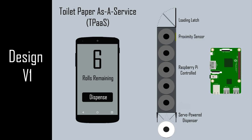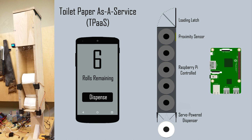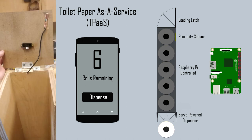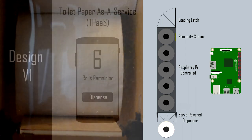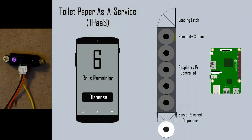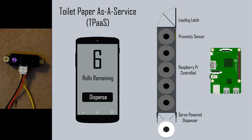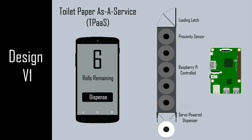Our preliminary design consisted of a tall enclosure to store the rolls, a hinge door to load the rolls from the top, and two servo-controlled platforms at the bottom to dispense them. A proximity sensor would detect when rolls are being loaded to assess capacity. The entire setup would be controlled by a Raspberry Pi 3 computer hosting a web server that the mobile app would interface with to control the dispenser.